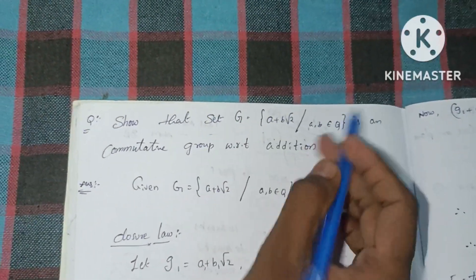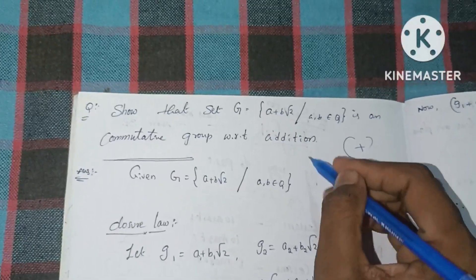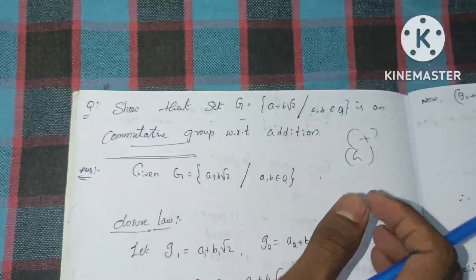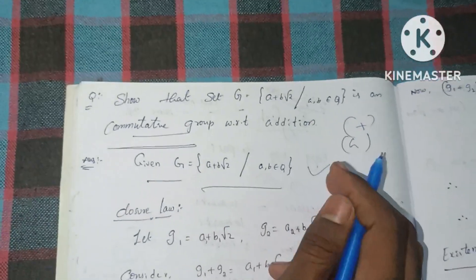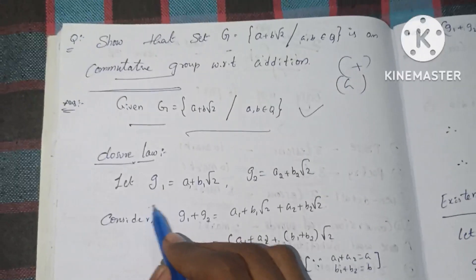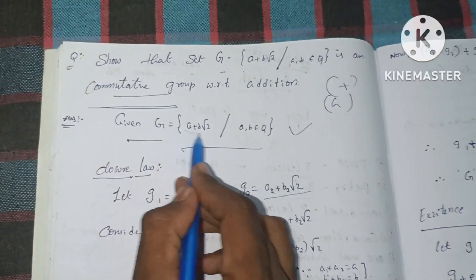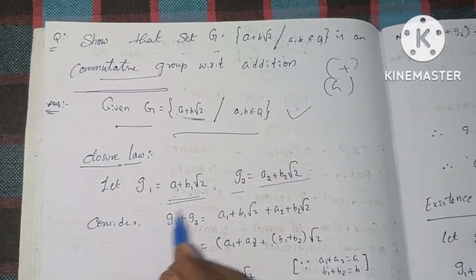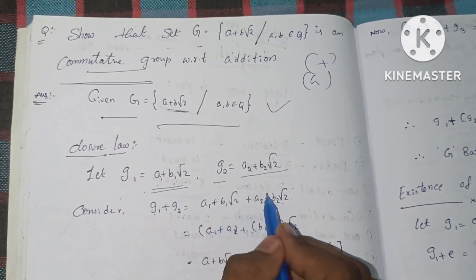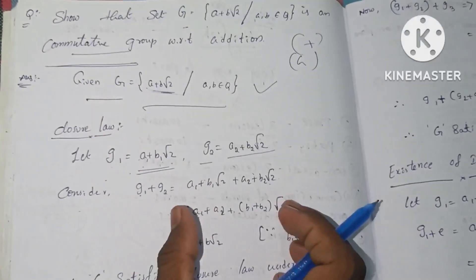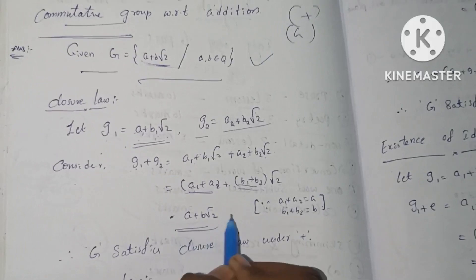Let's take two elements from the group. Let g1 equal to a1 plus b1 root 2, and g2 equal to a2 plus b2 root 2. We need to find g1 plus g2, which equals a1 plus b1 root 2 plus a2 plus b2 root 2, giving us a1 plus a2 and b1 plus b2 times root 2. This is of the form a plus b root 2, so it belongs to G.